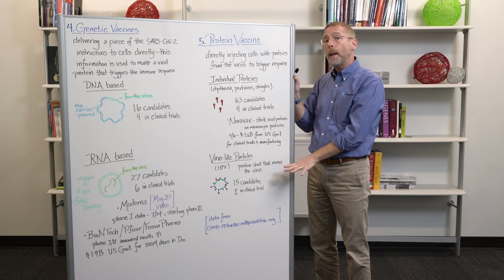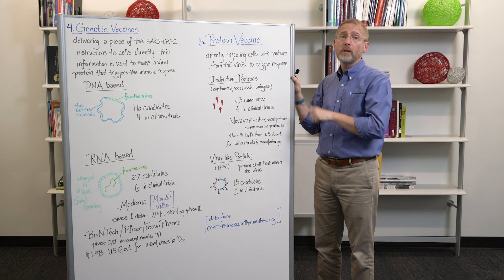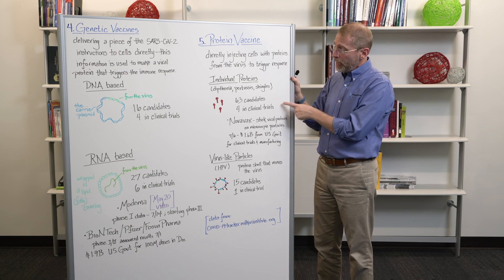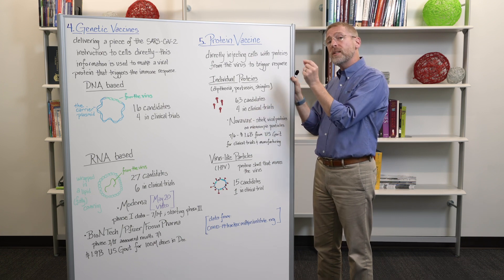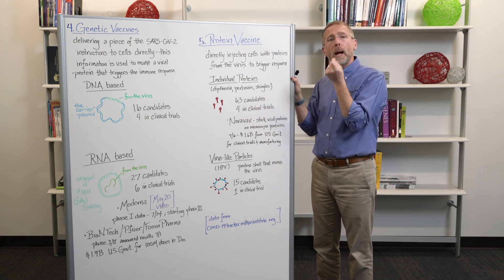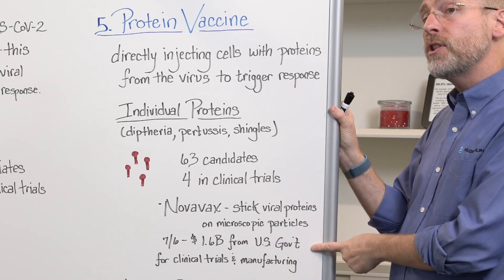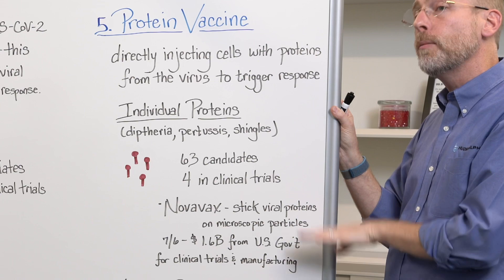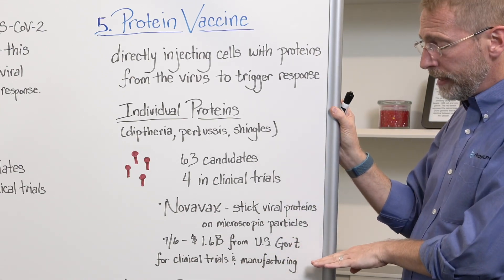63 candidates in this category, plus another 15 in the virus-like shell. This is a really popular approach that a lot of different groups are looking at. And several of these are in clinical trials already, including one from Novavax, which actually has found a way to stick lots of viral proteins on microscopic particles to then get them into the cell. They also have received a $1.6 billion government contract to help them move through their process of testing.